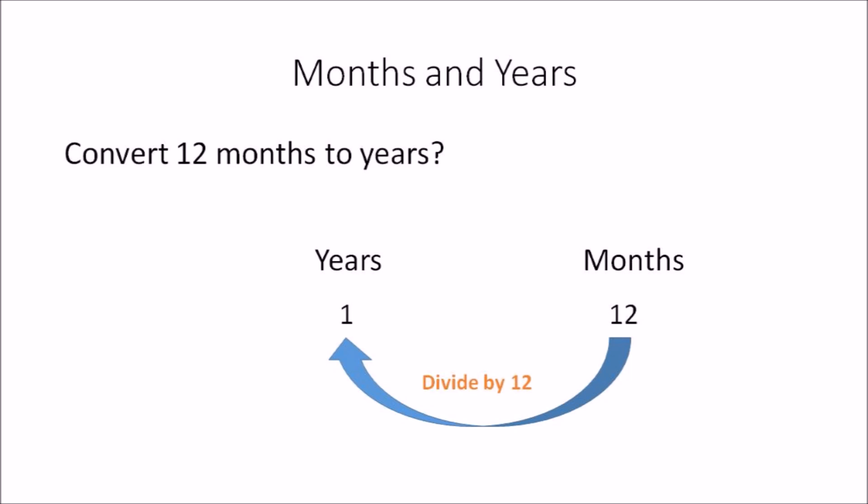In this example, convert 12 months to years. This one is very easy because 1 year is equal to 12 months, but you still need to follow this calculation method. All you need to do is divide the amount you have in months by 12. So 12 months divided by 12 will give you 1, so the answer is 1 year.